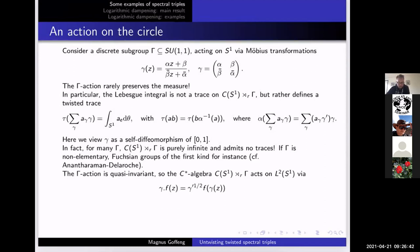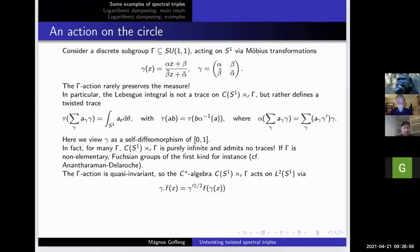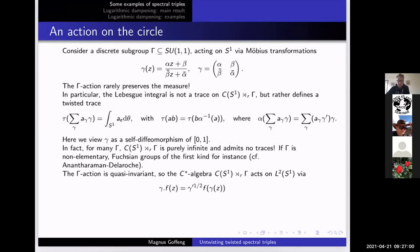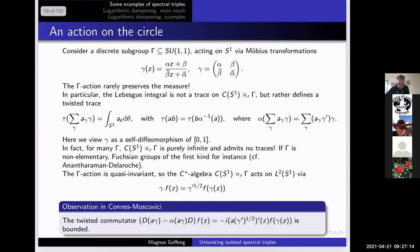But the action is quasi-invariant, which means that it preserves the measure class. So if you pull back the measure along the action, it gives you a measure that's absolutely continuous with respect to the Lebesgue measure. You can use this to define a unitary action of the cross product on L²(S¹), doing a pullback but also correcting by the Radon–Nikodym derivative. This example is looked at in a paper by Connes–Moscovici called 'Type III spectral triples.' They make the observation that if you take a twisted commutator with this action, twisted by exactly the automorphism, you actually have a bounded twisted commutator. So if you correct by this term coming from the quasi-invariance, you get something bounded. It's not a commutator in the classical sense, but a twisted commutator — and it's bounded.